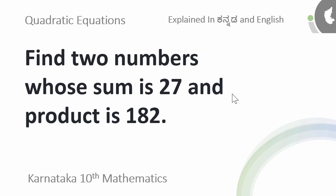Hello, welcome to this video. In this video we will find out two numbers whose sum is 27 and product is 182.